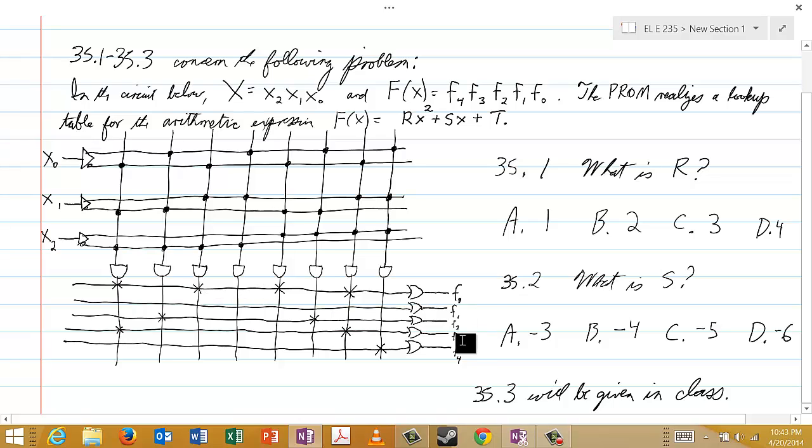But here for the output here at the bottom, the very bottom one is f4, and then f3, f2, f1, and then this one is f0.